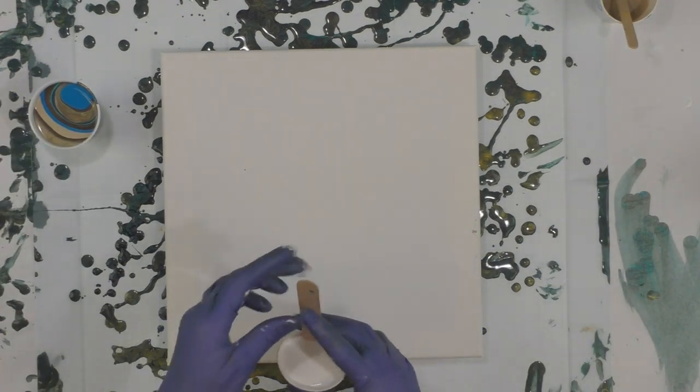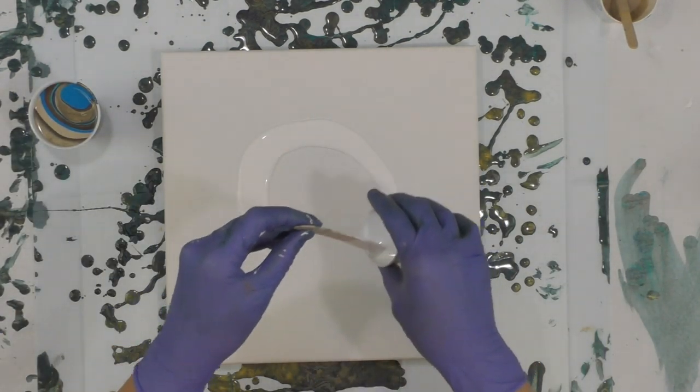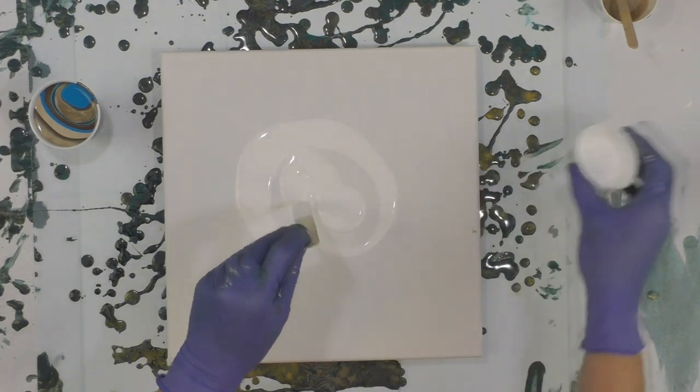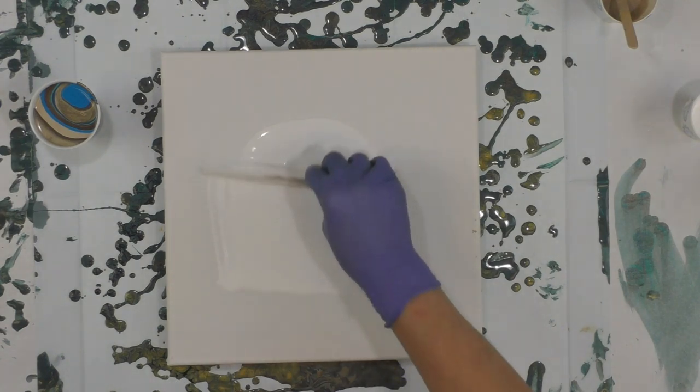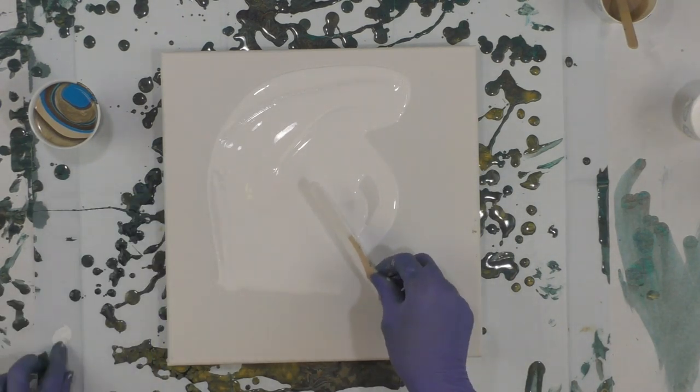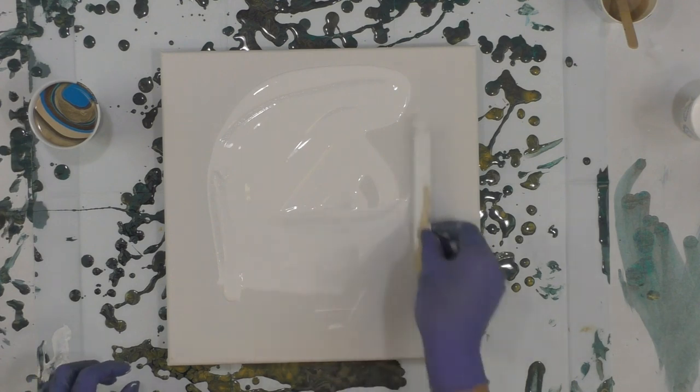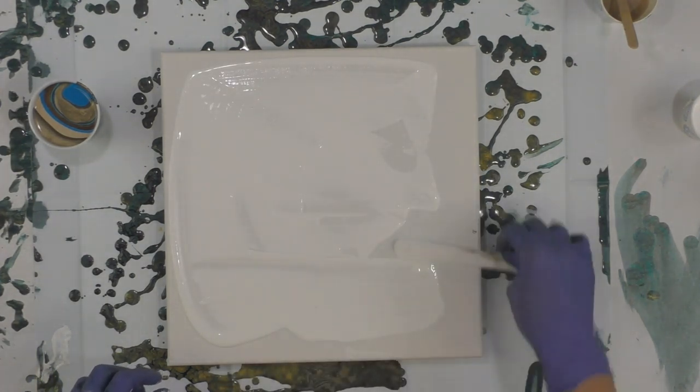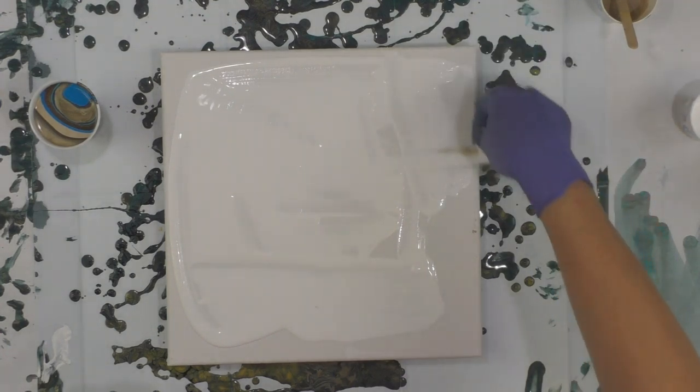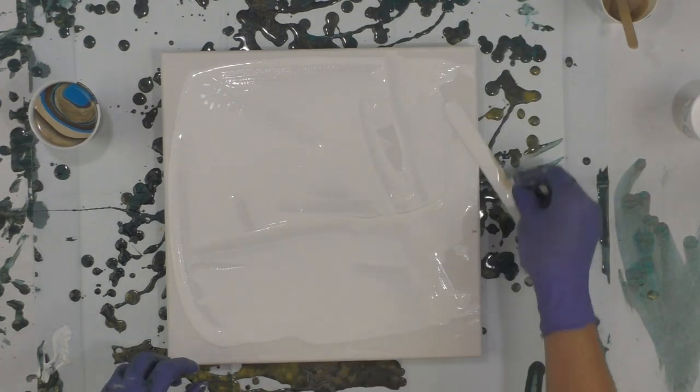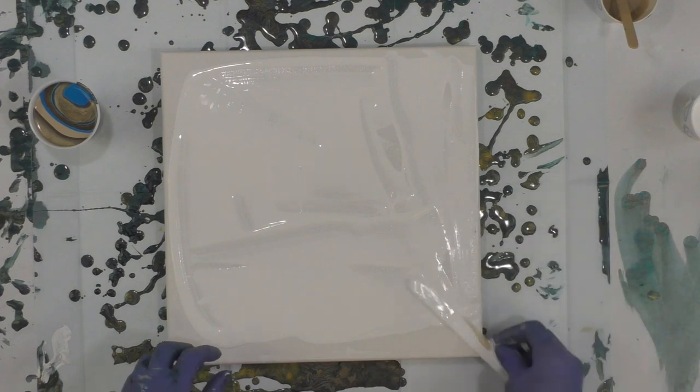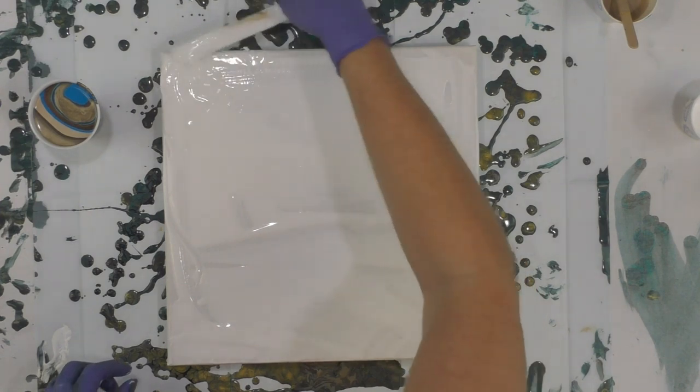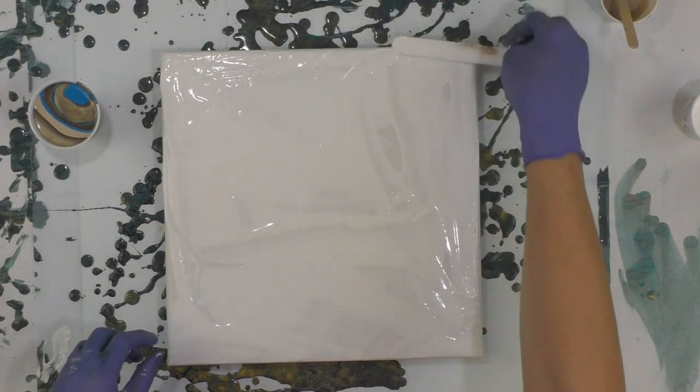I'm going to take the white—this is Artist Loft white half and half with DecoArt satin enamel white. That will do something in and of itself, hopefully, within the colors as well. We're just going to put down a basic white coat.